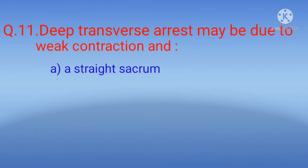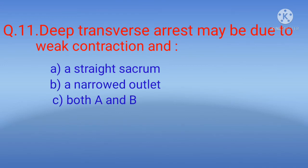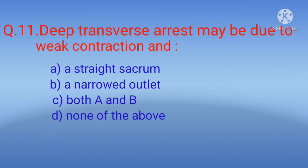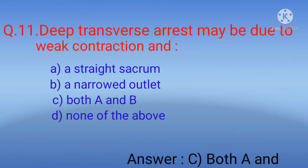Question 11: Deep transverse arrest may be due to weak contractions and — options: A) a straight sacrum, B) a narrowed outlet, C) both A and B, D) none of the above. The correct option is C) both A and B.